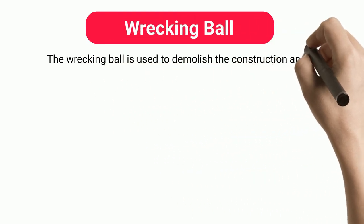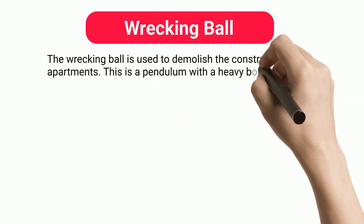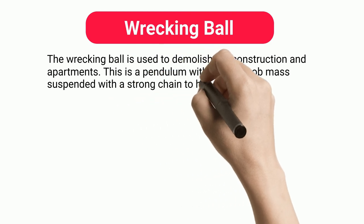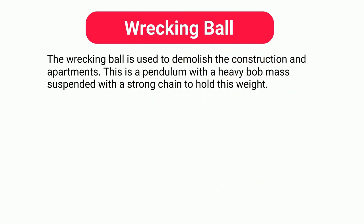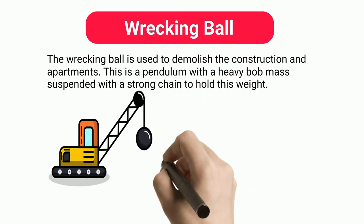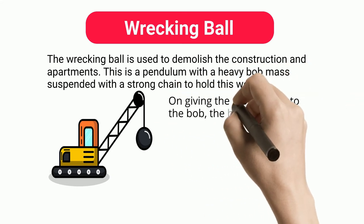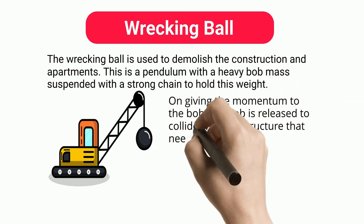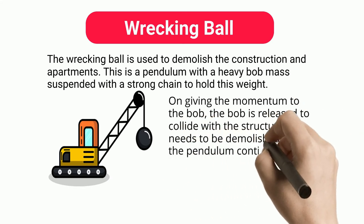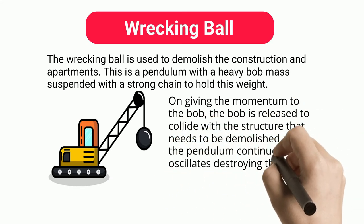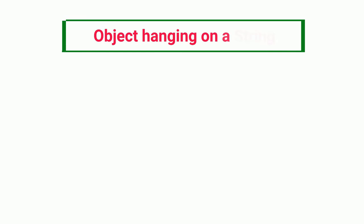Wrecking Ball: The wrecking ball is used to demolish construction and apartments. This is a pendulum with a heavy bob mass suspended with a strong chain to hold this weight. On giving momentum to the bob, the bob is released to collide with the structure that needs to be demolished, and the pendulum continuously oscillates destroying the structure.